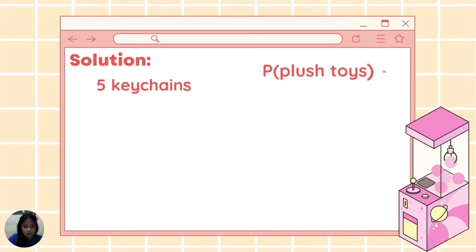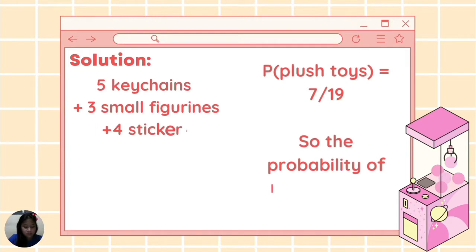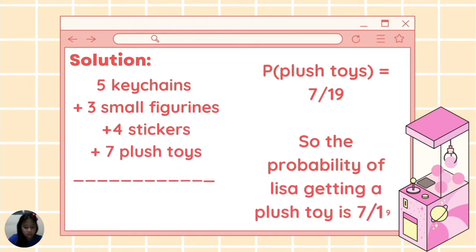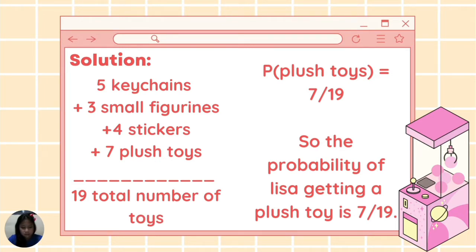Here's the solution. To find the probability, first we need to know the favorable outcomes and total outcomes. P is equal to the probability of the flashcards. The favorable outcome is 7. The total number of toys in the toy claw machine is 5 keychains plus 3 small figurines plus 4 stickers plus 7 flashcards, which equals 19. So P(flashcards) is 7 over 19. The probability of Lisa getting a flashcard is 7 over 19.